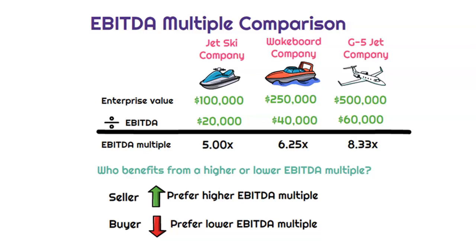It's expressed typically as a number. So in this case, JetSki company has an enterprise value of $100,000 and they're generating $20,000 of EBITDA — their EBITDA multiple would be 5X. Wakeboard company has $250,000 of enterprise value and EBITDA of $40,000, giving them 6.25X. And G5 Jet company has $500,000 in enterprise value with $60,000 of EBITDA, resulting in an EBITDA multiple of 8.33X.